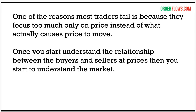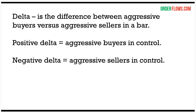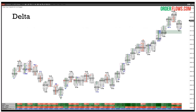One of the reasons most traders fail is they focus too much only on price instead of what actually causes price to move. Once you understand delta, imbalances, and point of control, you understand what's causing price to move — actual traders making trading decisions. Delta is the difference between aggressive buyers versus aggressive sellers in the bar. The market rotates around trying to find a price where buyers and sellers can trade together. Delta can clue you in on when buyers or sellers are taking control.